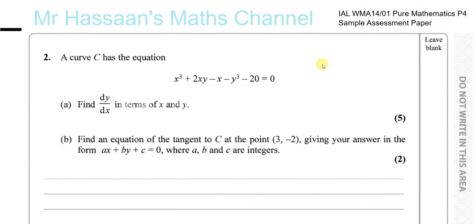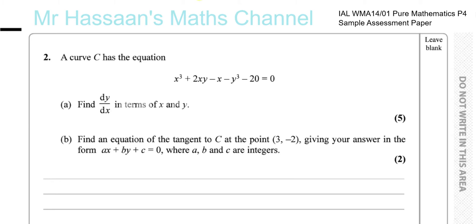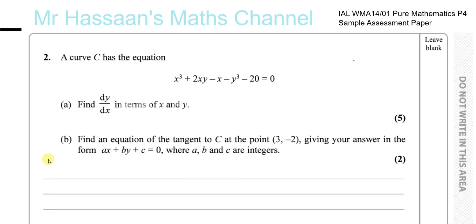Now for question number two from the paper for the P4 Pure Mathematics International A-Level Sample Assessment Paper. Here we have a question about differentiation, and this question involves what is called implicit differentiation, and we'll go through what that means now.